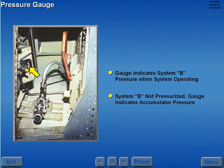However, when hydraulic system B is not pressurized, the gauge indicates a hydraulic accumulator pressure, which operates the air stairs if system B is not operating.